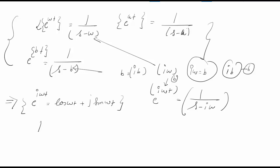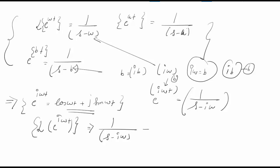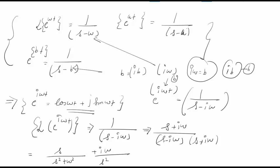The Laplace transform of e raised to i·omega·t is equal to 1 upon (s minus i·omega). This can be simplified by multiplying by the conjugate, which is (s plus i·omega), divided by (s minus i·omega)(s plus i·omega). This gives s divided by (s squared plus omega squared) plus i times omega divided by (s squared plus omega squared).